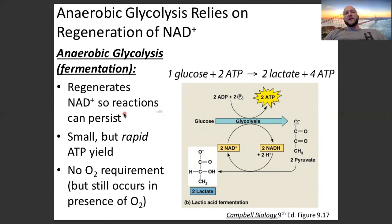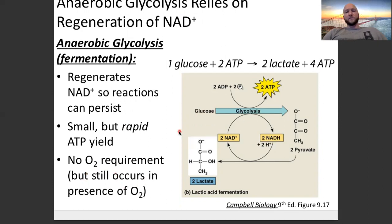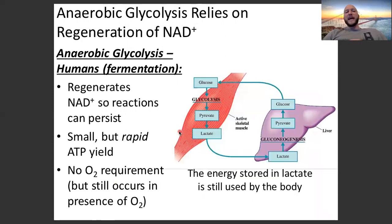Anaerobic respiration is beneficial because it provides a rapid ATP yield — small, but quick — and it does not require O2. But it still happens in the presence of O2, so it's always occurring in our bodies. What happens to that lactate? That lactate doesn't go to waste. It goes into our bloodstream and travels back to our liver.